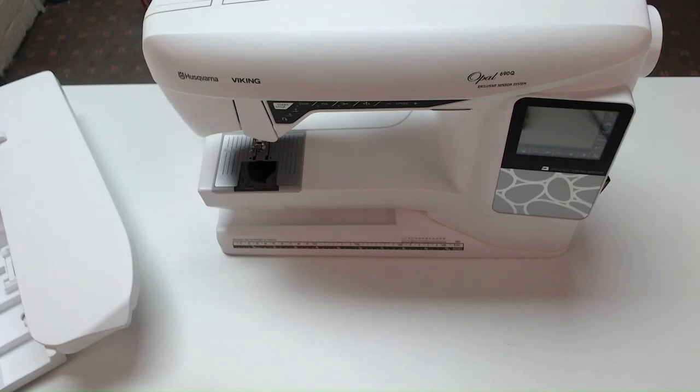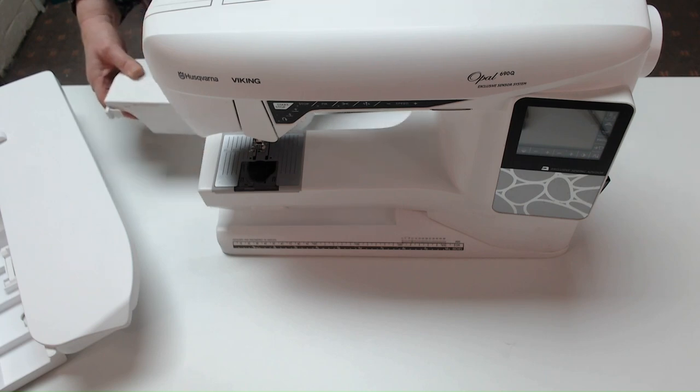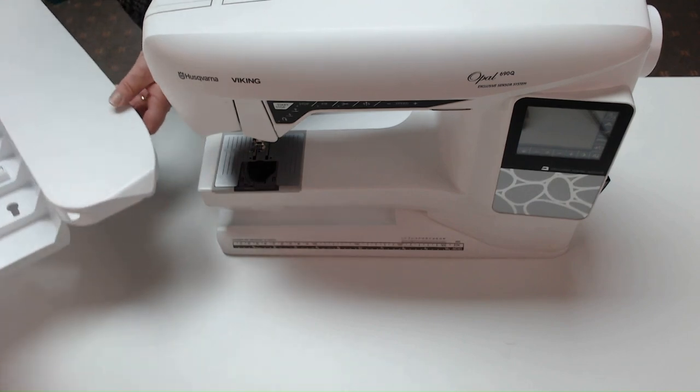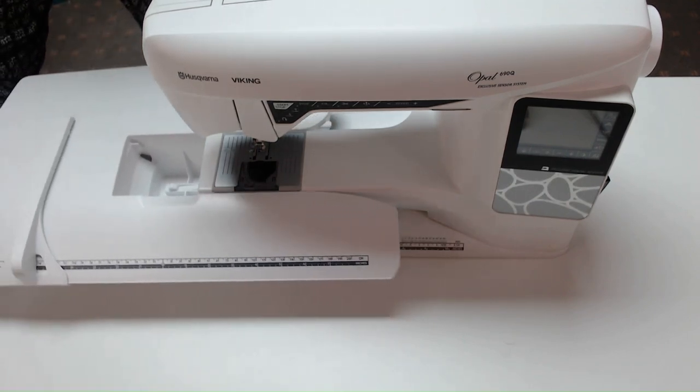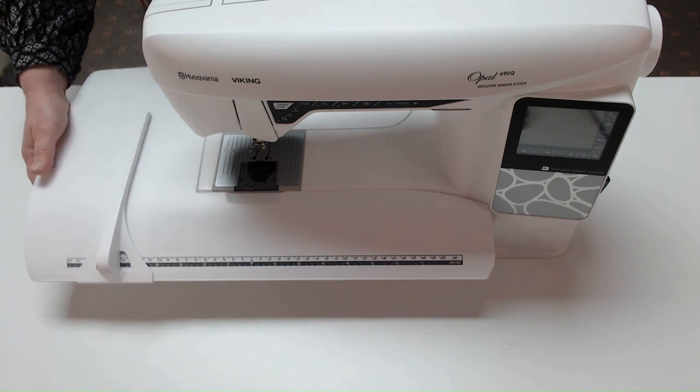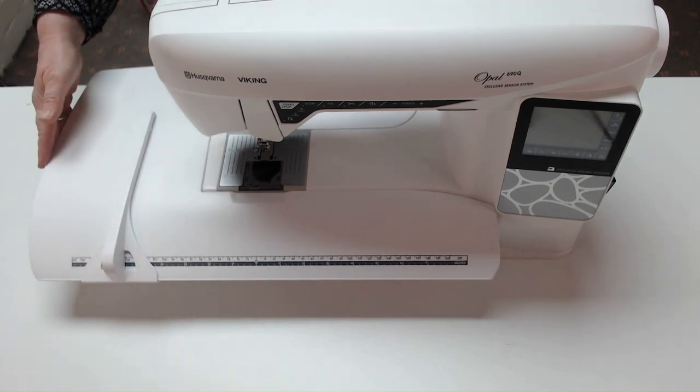I'm going to show you how to put your white extension table on. First, you need to take off your accessory tray—just pull it off the machine and put it to one side. Take the table and slide it where the accessory tray has been, all the way on, and then push it in to make sure it's tightly in place.